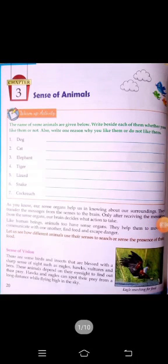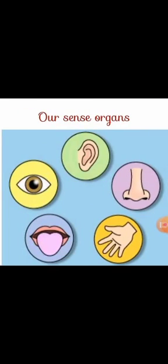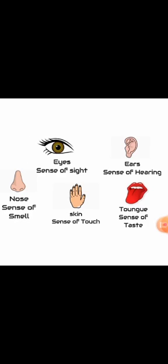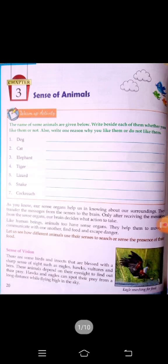Good morning students. Today we will study from Chapter 3: Sense of Animals. In this chapter we will learn about our sense organs. As we know, our sense organs are eyes, ears, nose, skin, and tongue. Eyes help us in sense of sight, ears in sense of hearing, nose in sense of smell, skin in sense of touch, and tongue in sense of taste.